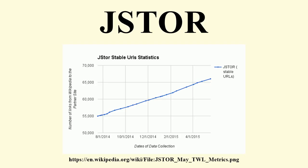In 2012, JSTOR users performed nearly 152 million searches, with more than 113 million article views and 73.5 million article downloads. JSTOR has been used as a resource for linguistics research to investigate trends in language use over time and also to analyze gender differences in scholarly publishing.